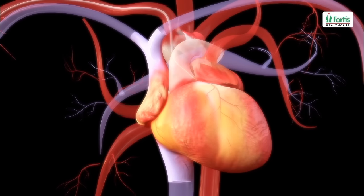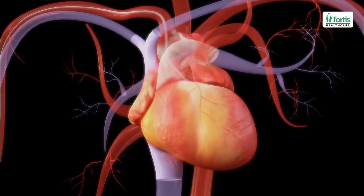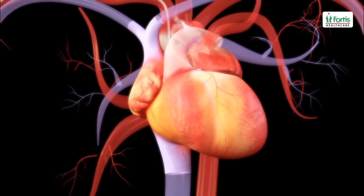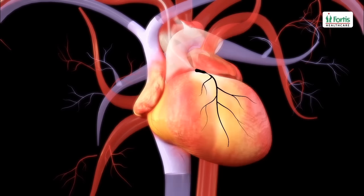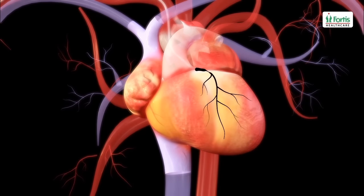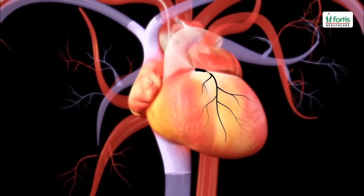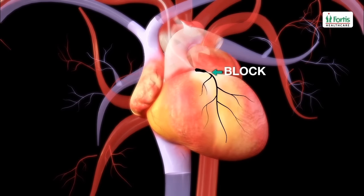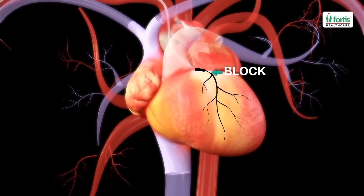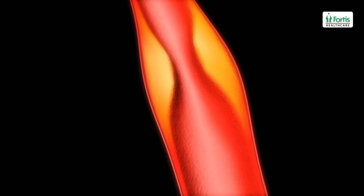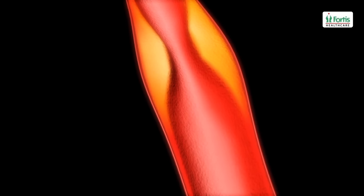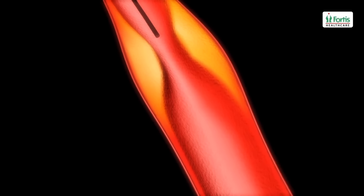The guide wire is removed and the tip of the catheter is positioned to enter the coronary artery. A special dye is injected which allows the fluoroscope to take X-ray images of the arterial interiors, helping to identify the position of the blockage. This imaging procedure is called an angiogram.